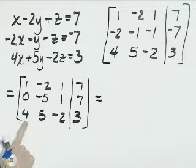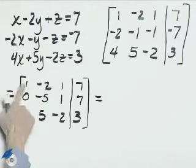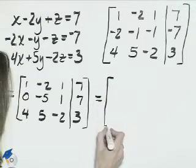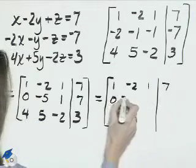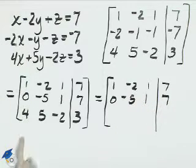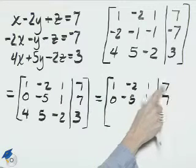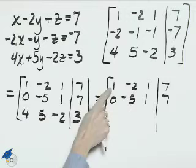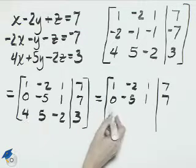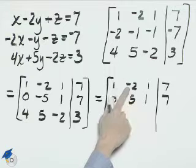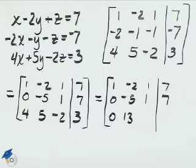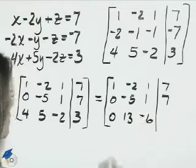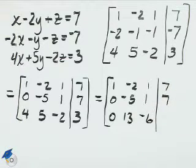Next, we need to get this number here to become 0 as well. In order to do that, we'll multiply the first row by negative 4 and add it to the third row. Our first and second rows will stay the same: 1, negative 2, 1, and 7; then 0, negative 5, 1, and 7. Now multiplying each part of the first row by negative 4 and adding it to the third row: 1 times negative 4 is negative 4, plus 4 is 0, which we need there. Negative 2 times negative 4 is positive 8; 8 plus 5 is 13. 1 times negative 4 is negative 4, and negative 4 plus negative 2 is negative 6.